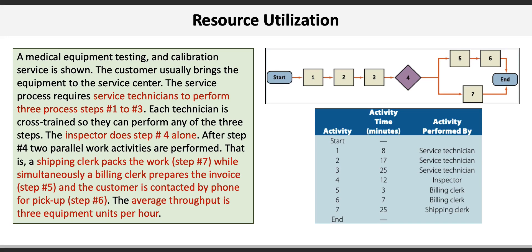There's an inspector that does step four alone, and after that, two parallel work activities are performed. A shipping clerk packs the work in step seven, while simultaneously a billing clerk prepares the invoice in step five. Then the customer is contacted by phone for pickup. The average throughput is three equipment units per hour.